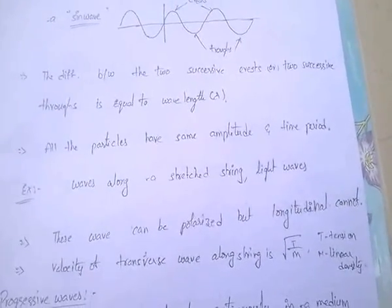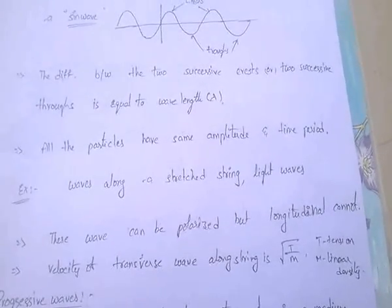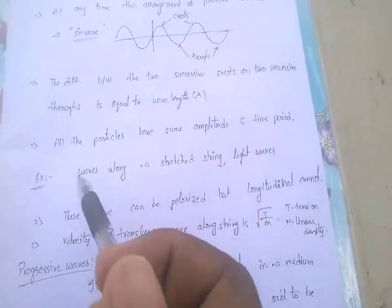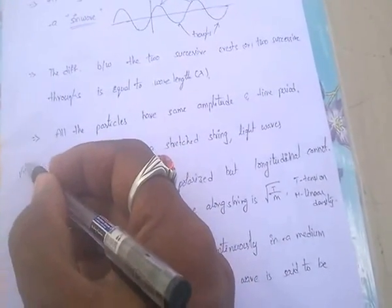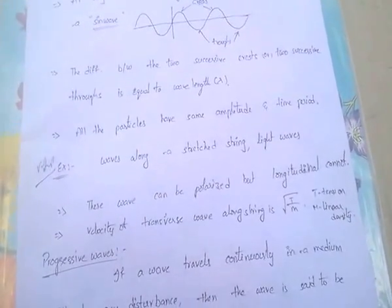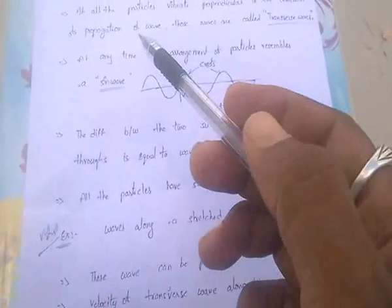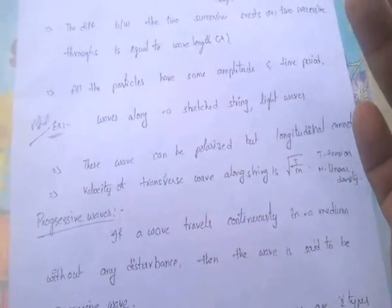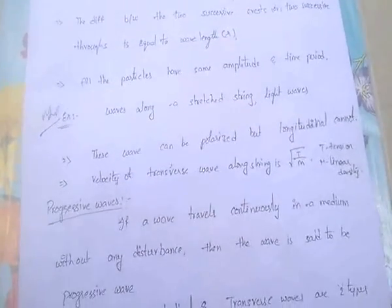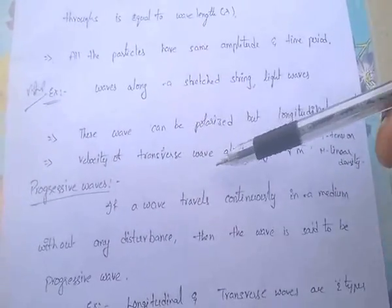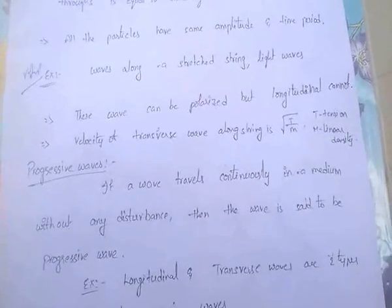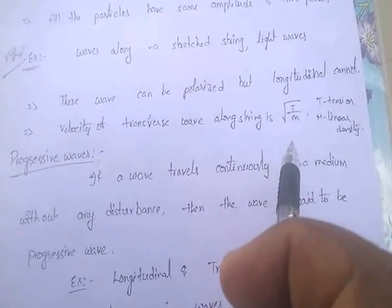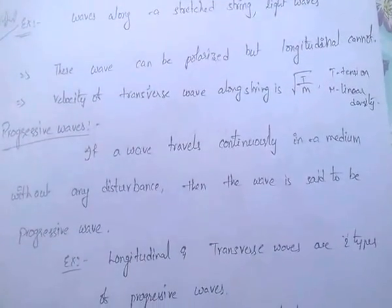All the particles in a transverse wave have the same amplitude and time period. Examples of transverse waves are waves along a stretched string and light waves. Light waves are transverse waves and sound waves are longitudinal waves. Transverse waves can be polarized, but longitudinal waves cannot be polarized — they can only be reflected and refracted. The velocity of a transverse wave along a string is v = √(T/M), where T is tension and M is linear density.